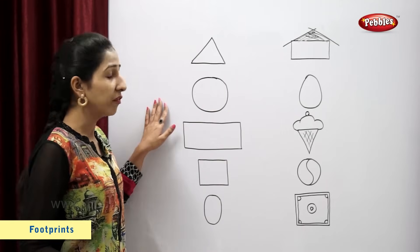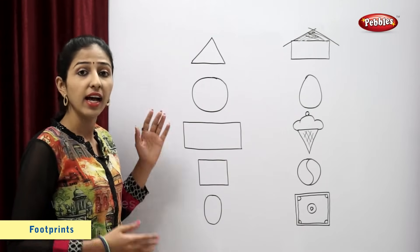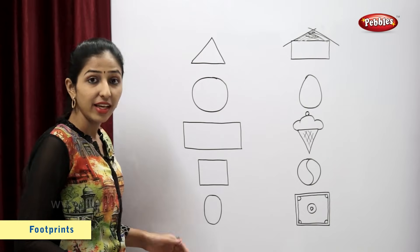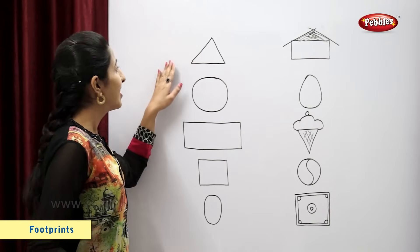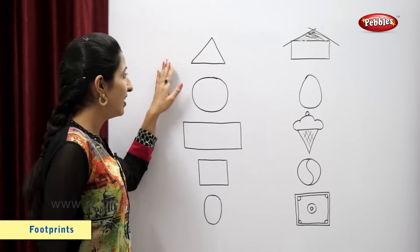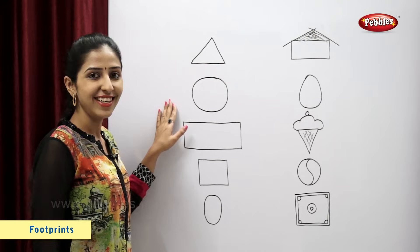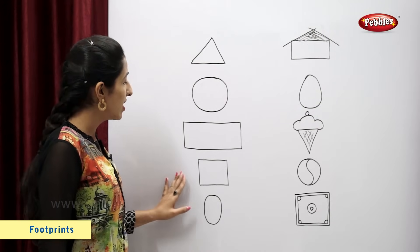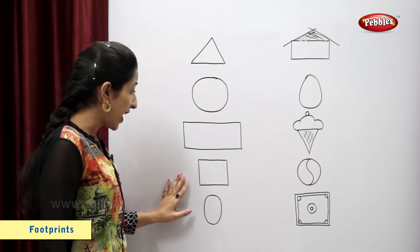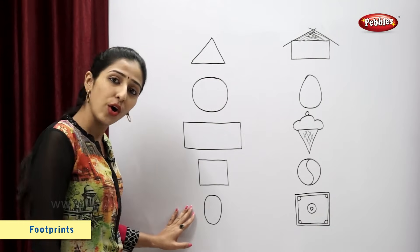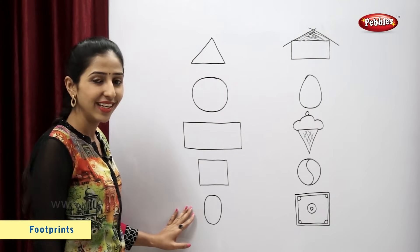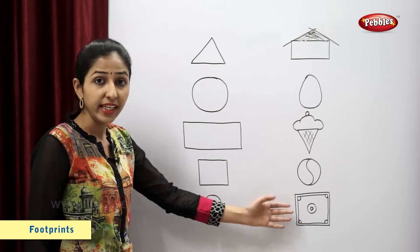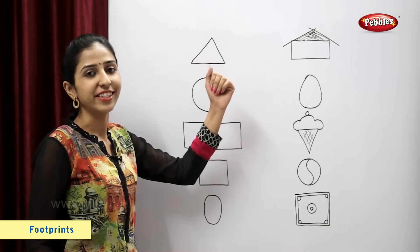Students, on one side I have drawn shapes. The shapes are triangle, circle, rectangle, square and oval. On the other side, I have drawn figures.